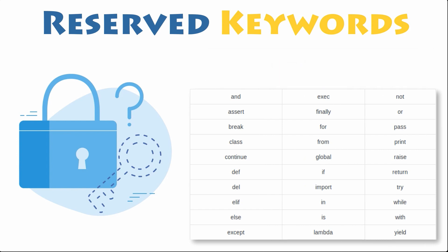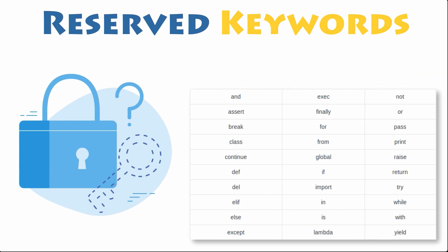Reserved words are case sensitive and must be used exactly as shown. They are all entirely lowercase except for False, None, and True. Trying to create a variable with the same name as any reserved word results in a syntax error.